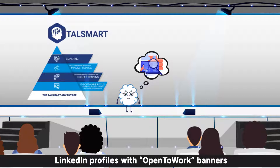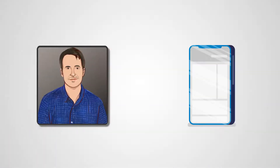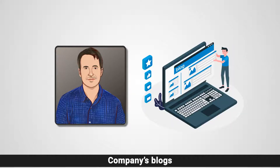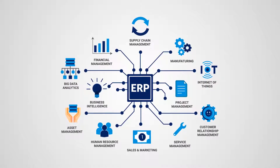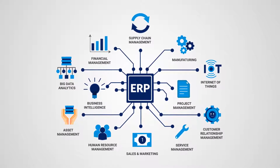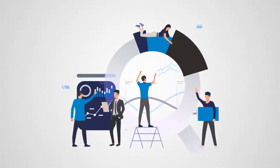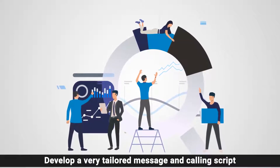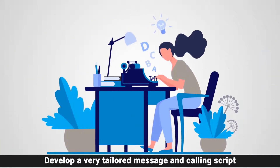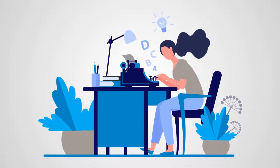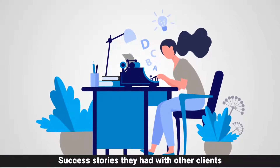On the other hand, existing employees with open source experience had updated their LinkedIn profiles with 'Open to Work' banners. As a first step, Sam commented on the interview by Aiden and shared a link to one of his company's blogs about how cloud-based ERP systems provide efficiency while keeping costs under control. Sam also worked with his marketing team to develop a tailored message and calling script around Clairvoyant's capabilities in ERP and some of their client success stories.